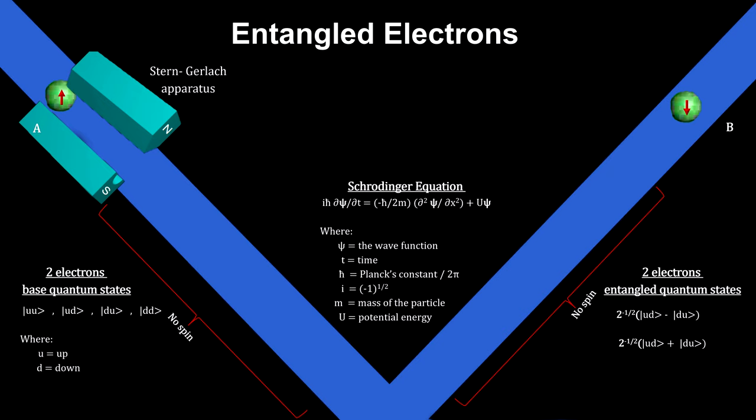If A was up, B will be down. If A was down, B will be up. This is as expected because both particles are following the one wave function.